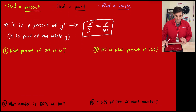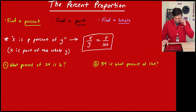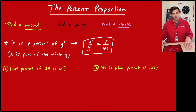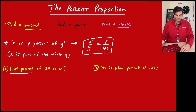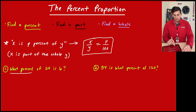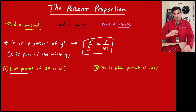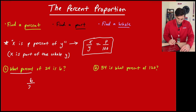Let's start with finding a percent. For number one, it says 'What percent of 24 is 6?' Notice it says 'what percent,' so that's telling us we need to find p. Now we just need to know: is 24 the part or the whole? Well, 24 is our whole and 6 is the part — so we write this as 6 over 24 equals p over 100.